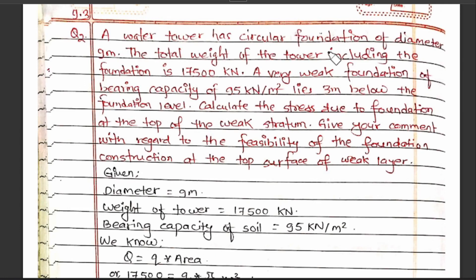Question 6. A water tower has a circular foundation of diameter 9 meters. The total weight of the tower including the foundation is 17,500 kN. A very weak foundation layer with a bearing capacity of 95 kN per meter square lies 3 meters below the foundation level. Calculate the stress due to the foundation at the top of the weak stratum and comment on the feasibility of the foundation construction.